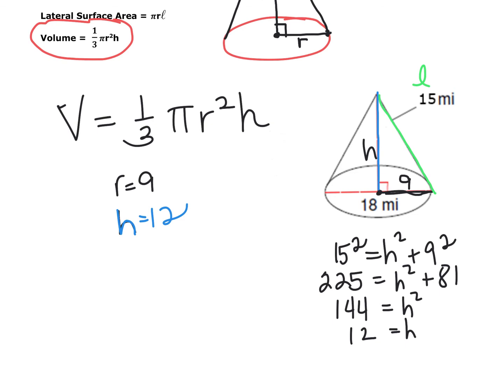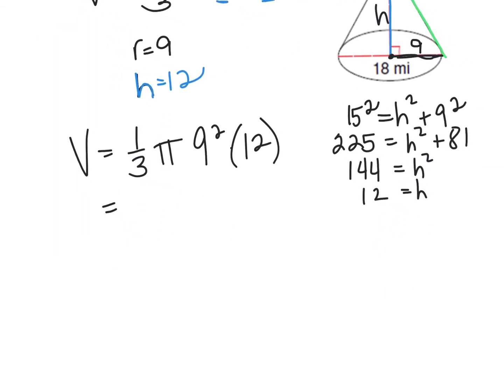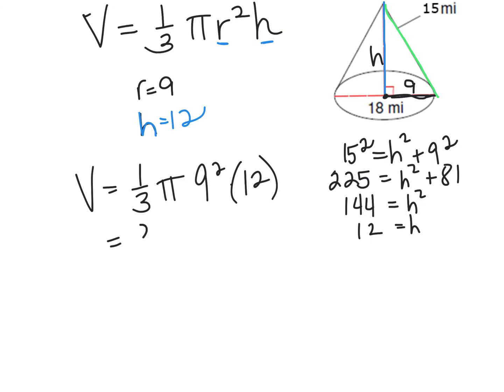That's all we need is the r and the h. So we're going to plug that in our formula. The volume is one-third pi times 9 squared times 12. We'll find our exact answer first. We get 324 pi miles cubed, which is approximately 1017.876 cubic miles.